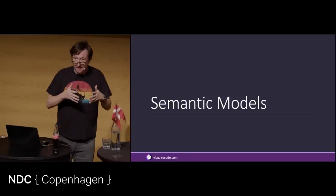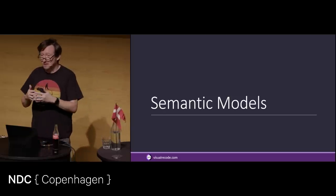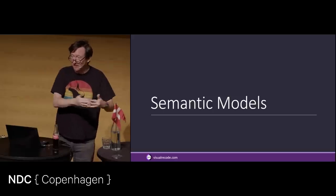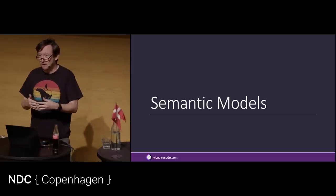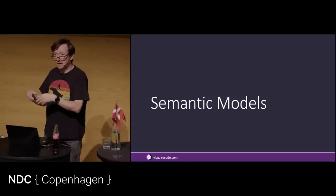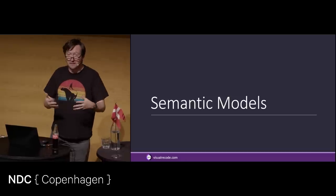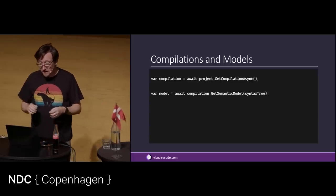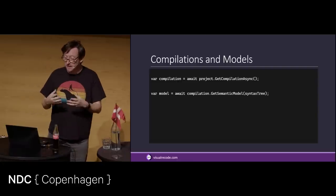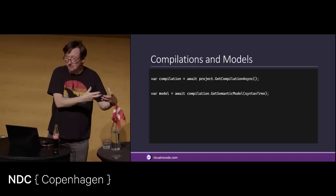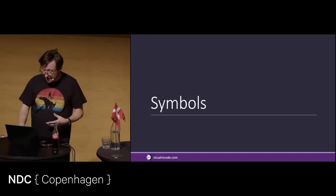And so this is where Roslyn gets really cool. It has this idea of semantic models. You can say: I've got my syntax tree — give me what it means. Give me a model that tells me what everything in that syntax tree means. And that gives us something that looks a lot like doing reflection at runtime. If you've got a type and you do object.GetType(), you can do GetMethods and GetProperties and GetFields. The semantic model gives you the same kind of functionality, but at design time — it's doing it with code that's not running. We say await project.GetCompilationAsync(), and from the compilation we can pass in the syntax tree and say give me the semantic model for this. Within that we get symbols.